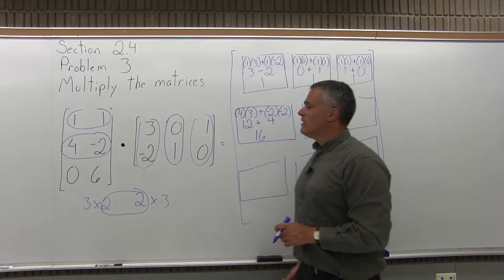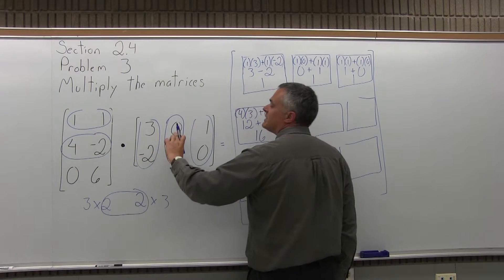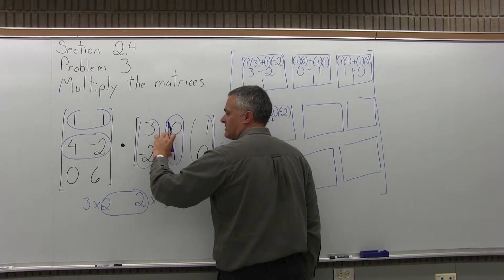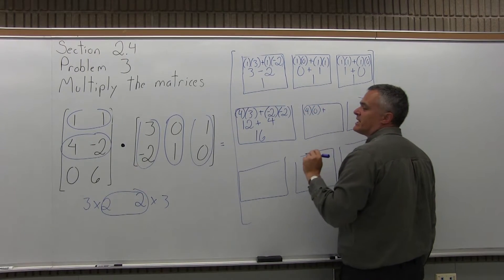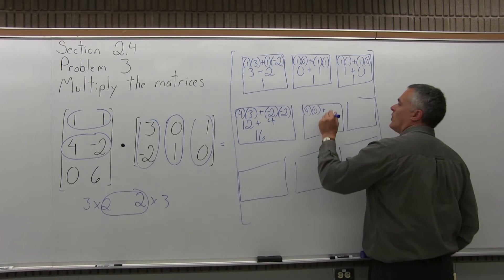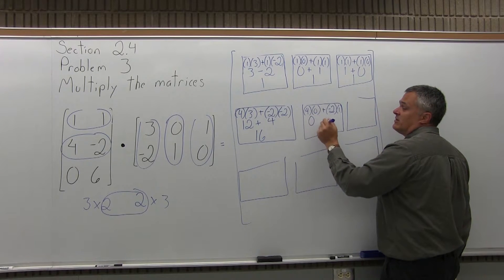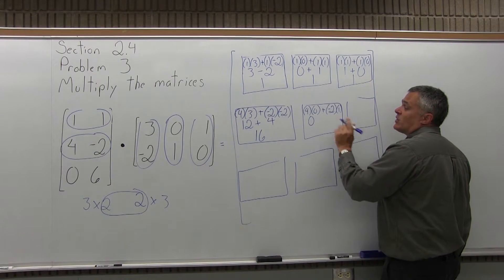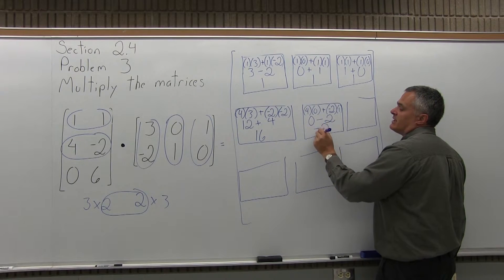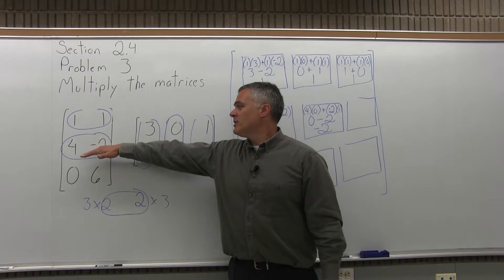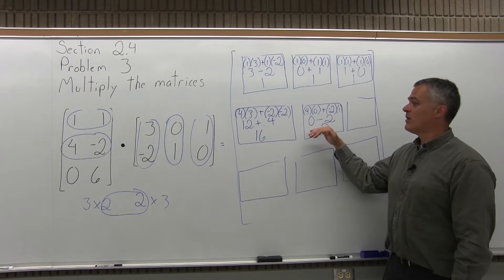Next, I multiply the middle row, 4, negative 2, times the middle column, 0, 1, of the second matrix. First times first is 4 times 0, added to second times second, negative 2 times 1. So 4 times 0 is 0, and negative 2 times 1 is minus 2. Instead of 0 plus minus 2, I'll write 0 minus 2, which equals negative 2. I multiplied the middle row of the first matrix times the middle column of the second, and that answer goes in the middle row and middle column.